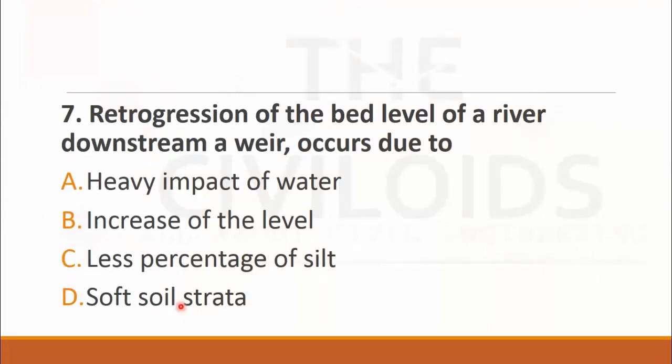MCQ number seven: Retrogression of the bed level of a river downstream a weir occurs due to. The choices are: A. heavy impact of water, B. increase of the level, C. less percentage of silt, and D. soft soil strata. The right choice is C. less percentage of silt.